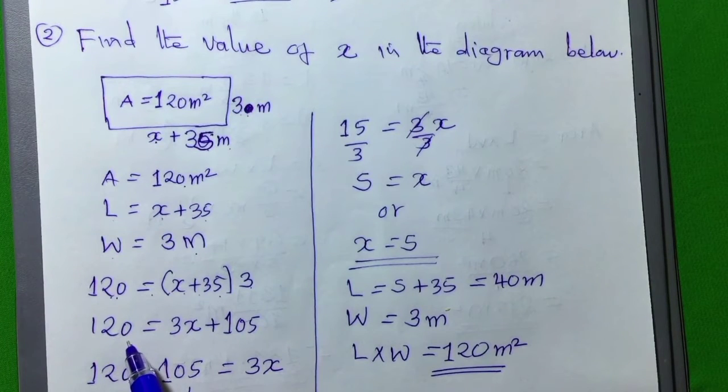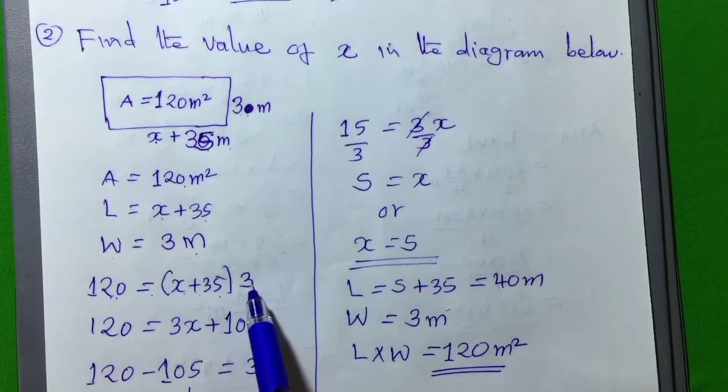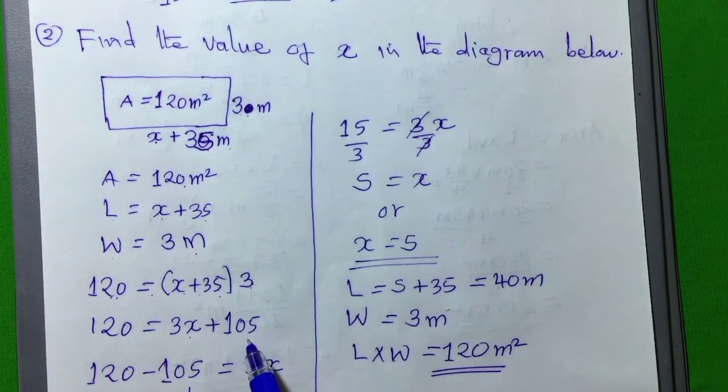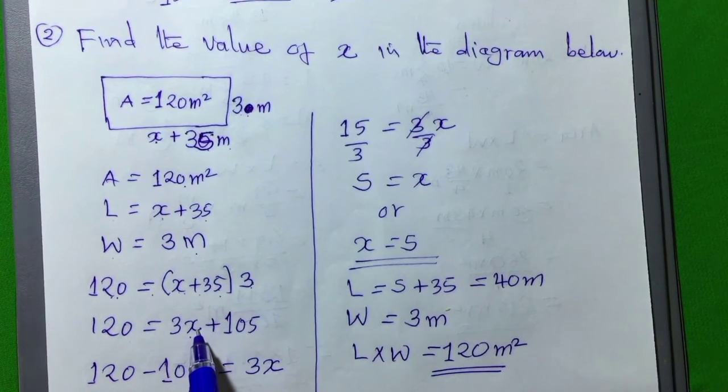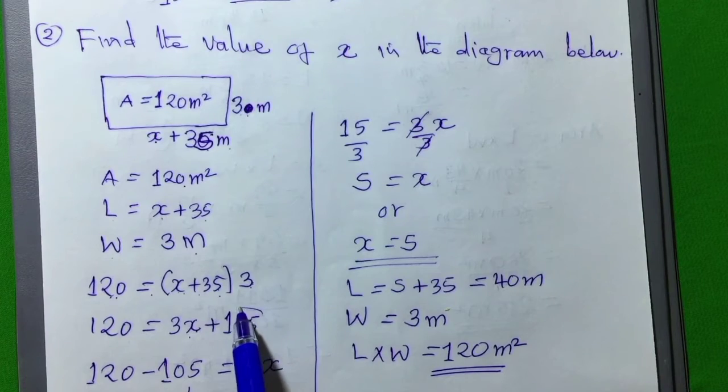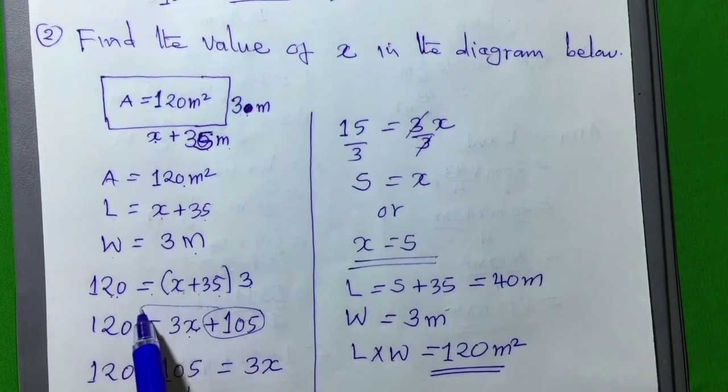Then, let's continue and say, bring down 120 here, and then 3 multiplied by x, we will have 3x, and 3 multiplied by 35, we will get 105, and then let's find this value.